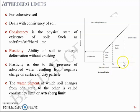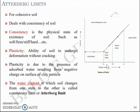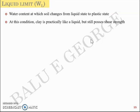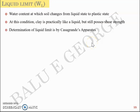In short: liquid limit (LL) is the water content at which soil changes from liquid state to plastic state. Plastic limit is the water content at which soil changes from plastic to semi-solid state. Shrinkage limit is the water content at which soil changes from semi-solid to solid state. Taking up the first one — liquid limit — it is the water content at which clay is practically like a liquid but still possesses a certain amount of shear strength.